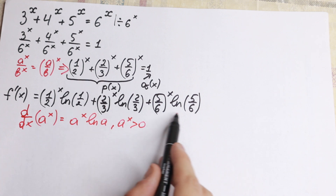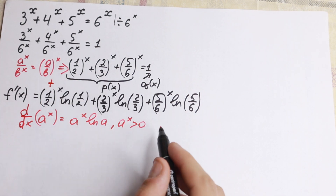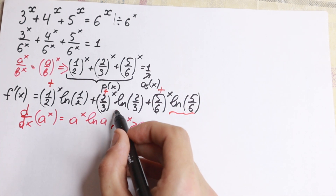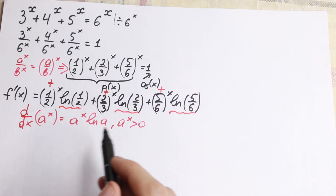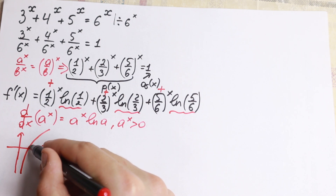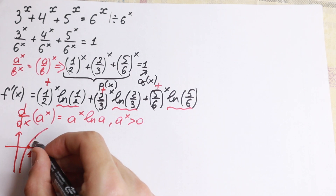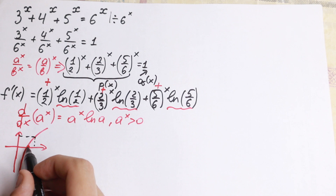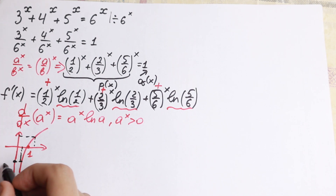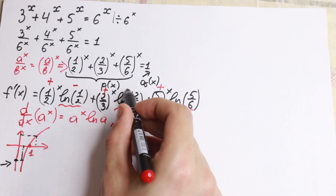Let's find the sign of this derivative. One half to the power x is positive, 2 thirds to the power x is positive, and 5 over 6 to the power x is positive. But what about natural log of 5 over 6, natural log of 2 thirds, and natural log of one half? Because each base is less than 1 — if we draw the graph of the logarithm function, when x is less than 1, y is less than 0. So all three natural log values are negative, giving us minus.